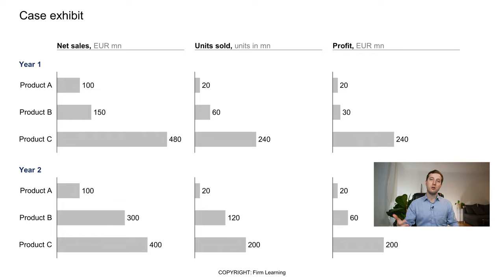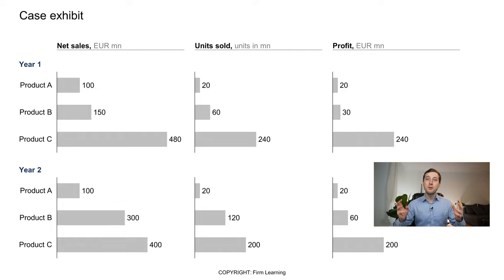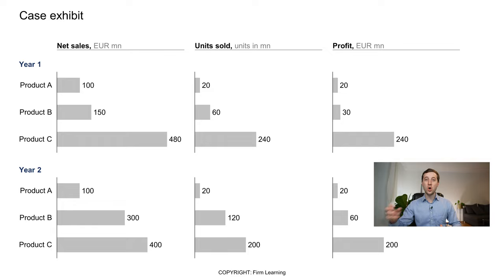The crucial insight is that product C seems to be the most important product for the company in terms of both revenue and profit — but product C is declining. Revenues are down, profits are down. And while product B is growing, it doesn't even compensate for the loss product C is making. You really need to investigate what is going on with product C. This is exactly what the stellar candidate draws out — finding this implication and linking it back to the case question. Don't just restate facts; show the implications for the manager, the CEO, your client.